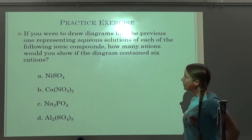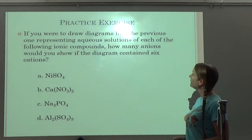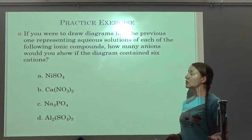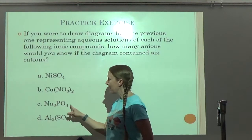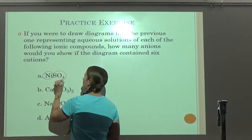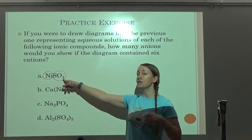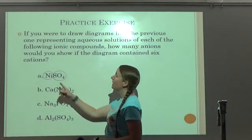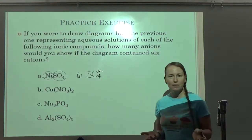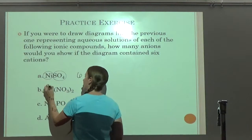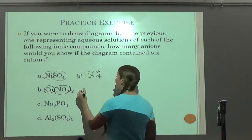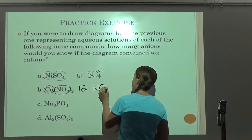If you were to draw diagrams representing aqueous solutions of each of the following ionic compounds, how many anions would you show if the diagram contains six cations? All I need to do is look at the relative amounts of each ion. For NiSO₄, for every one nickel I get one sulfate — SO₄ is one sulfate ion, not four. So if I have six nickels, I need six sulfate ions. For Ca(NO₃)₂, for every one calcium I need two nitrates — so six calciums means 12 nitrates.